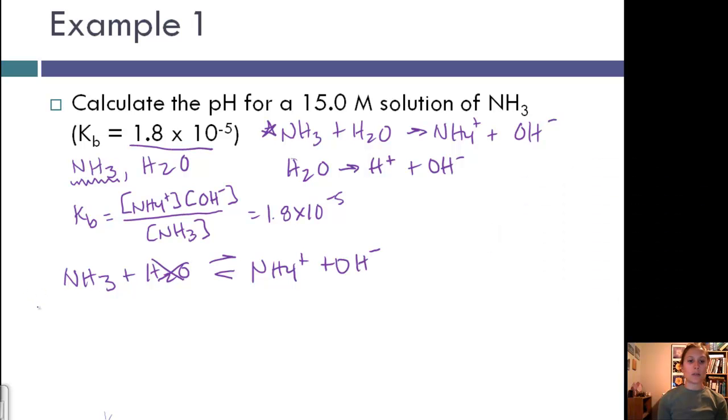Our initial concentration, we had 15 molar of NH3, none of our products. If we say that X is equal to the change in NH3 concentration, then this is minus X plus X plus X. Our equilibrium can be written as 15 minus X, X, and X. Then our next step is to plug into the Kb to solve for X. Let's go to the next page to do that.